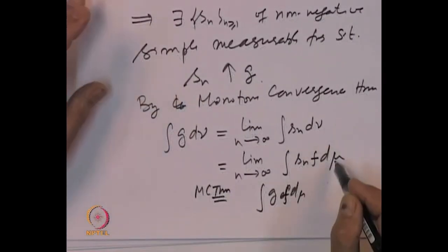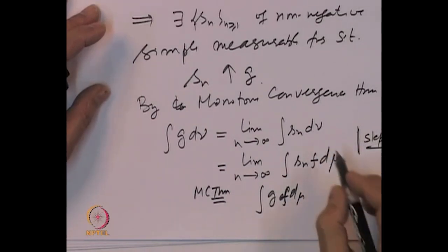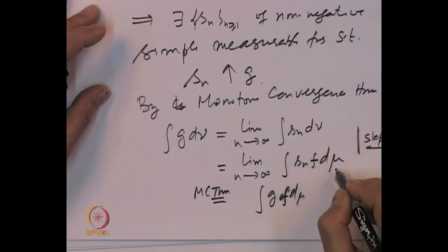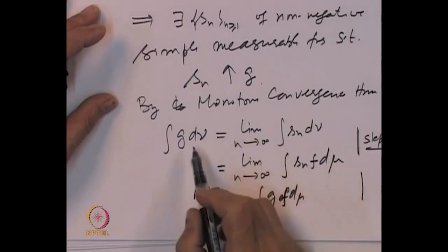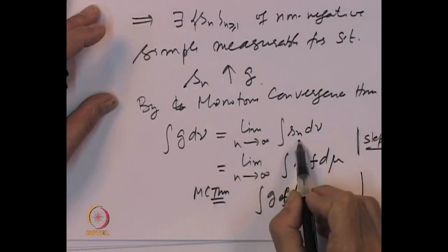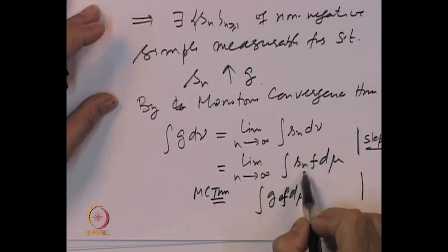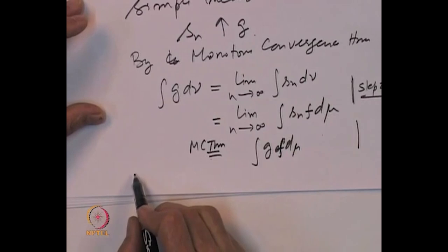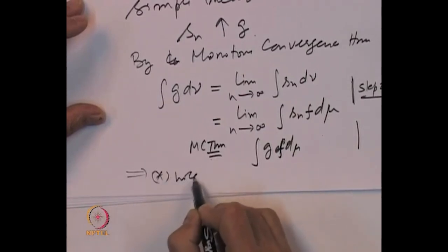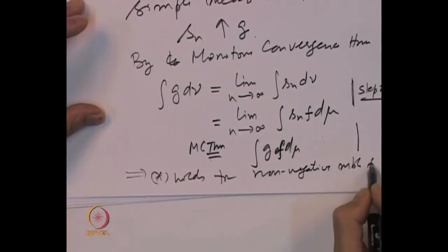We used step 2 — that the property holds for non-negative simple measurable functions — and then applied the monotone convergence theorem twice: first, ∫G dν = lim ∫S_n dν, then by our earlier step this equals lim ∫S_n f dμ, and by monotone convergence again it equals ∫Gf dμ. This implies that property star holds for all non-negative measurable functions.